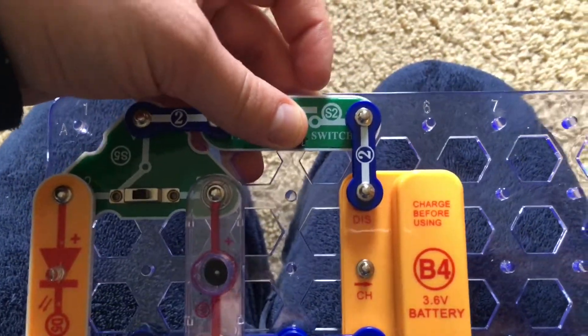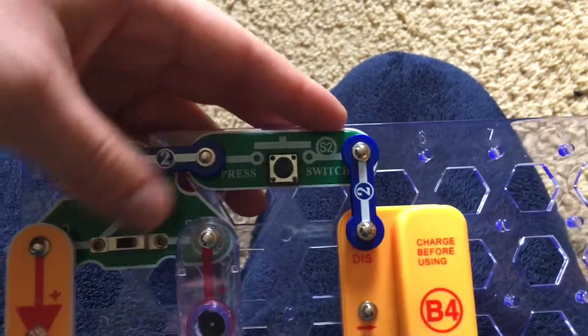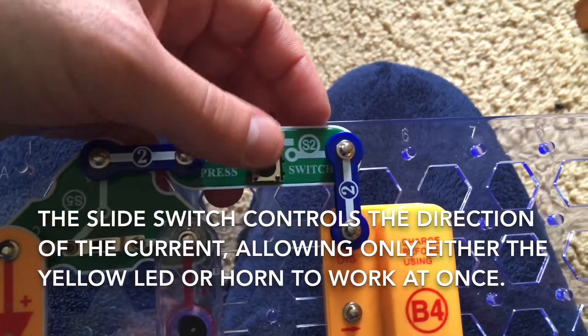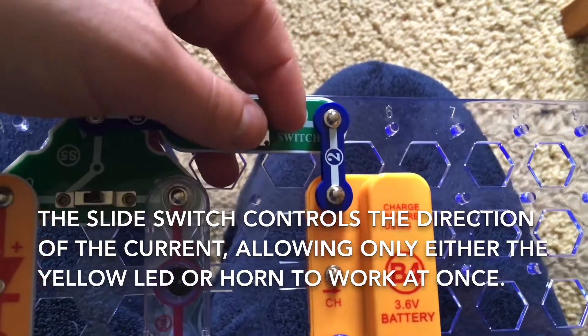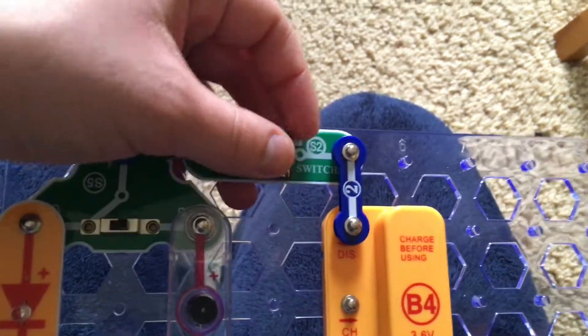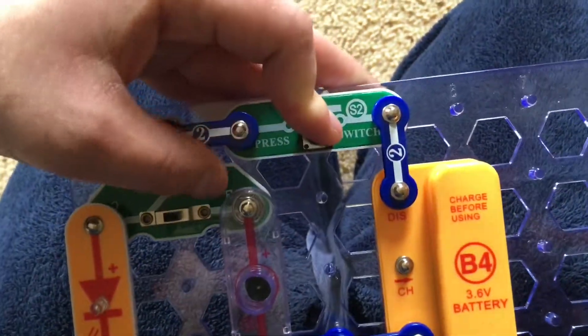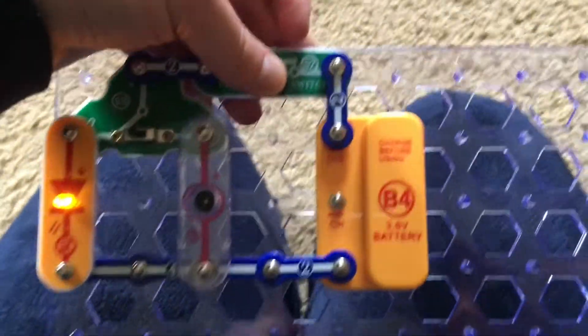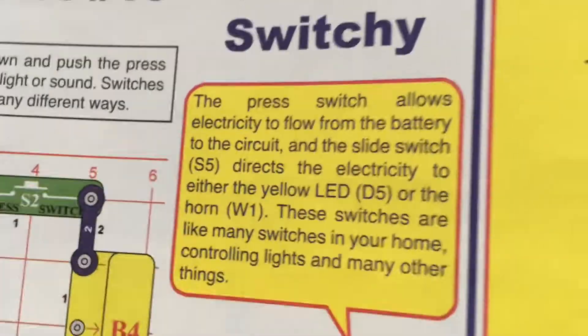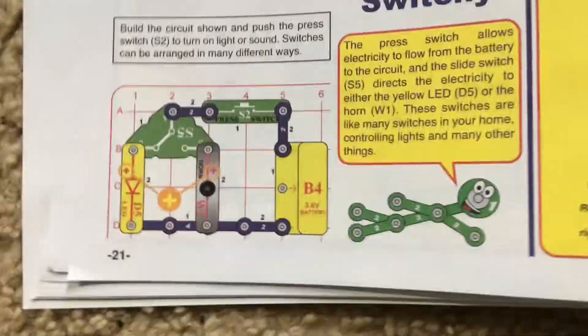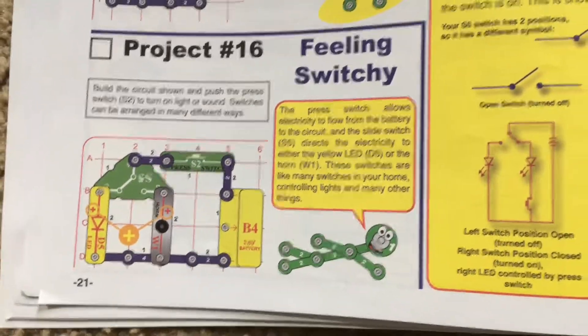That's because, regardless of the position of the slide switch, the press switch has to be held down. The slide switch is determining which direction the current flows. It can either flow through the horn or through the yellow LED, but it cannot flow through both components at once. And these switches act like those in your home that control lights, fans, and many other devices.